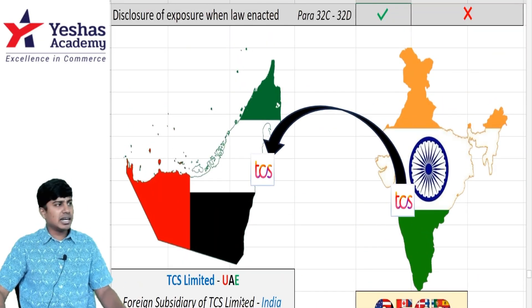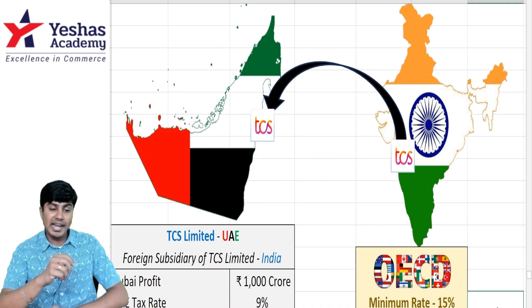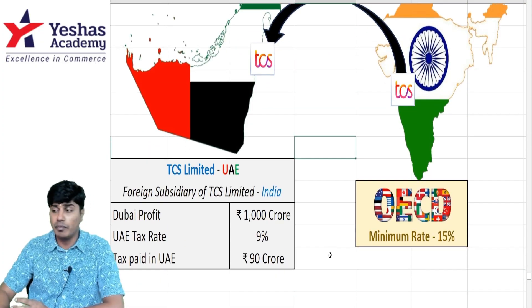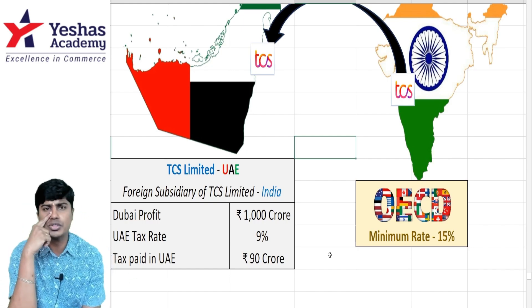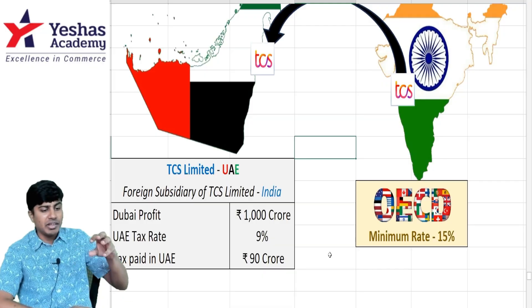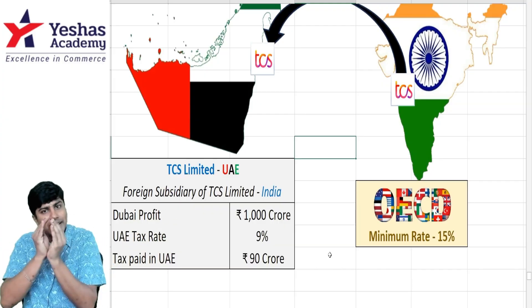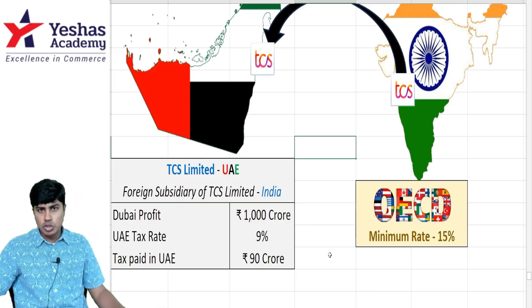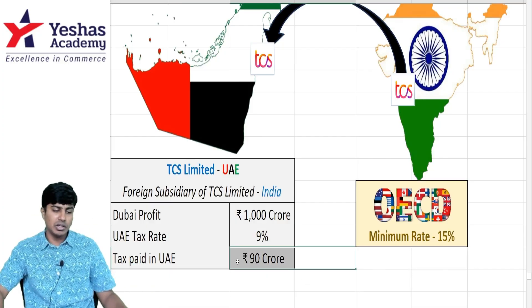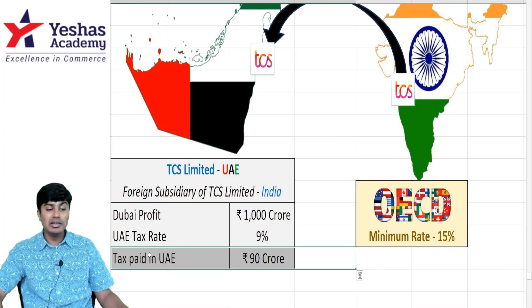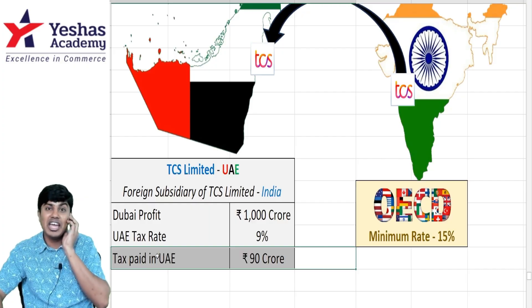Here is a beautiful example. Tata Consultancy Services, an Indian company, has set up its subsidiary in UAE, Dubai, and made a profit of 1000 crores there. The subsidiary is a separate company — the holding company is in India, subsidiary is in Dubai — and they have 1000 crores profit there. The tax rate applicable in Dubai is 9%. Applying 9% on 1000 crores gives 90 crores of tax paid. Now, will OECD top-up tax apply? It depends on the effective tax rate.